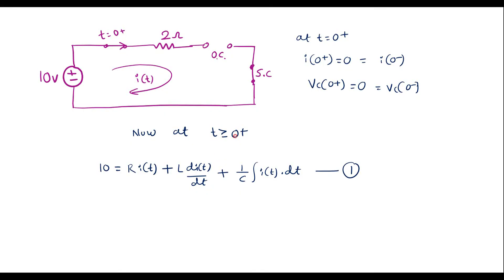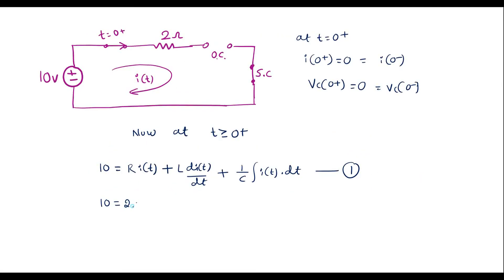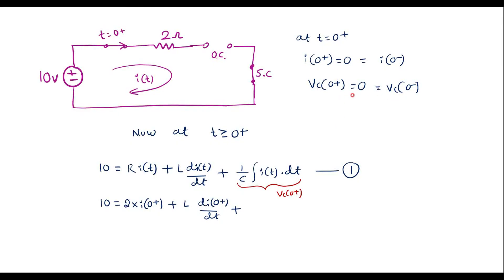Now, let me consider t equal to 0 plus. I can write: 10 is equal to 2 into I of 0 plus, plus L times di of 0 plus divided by dt, plus Vc of 0 plus. This last term is the voltage across the capacitor, which is already 0. So that term will be 0.